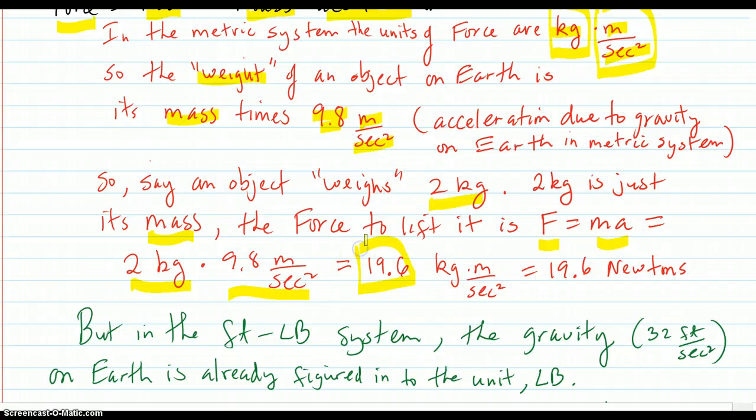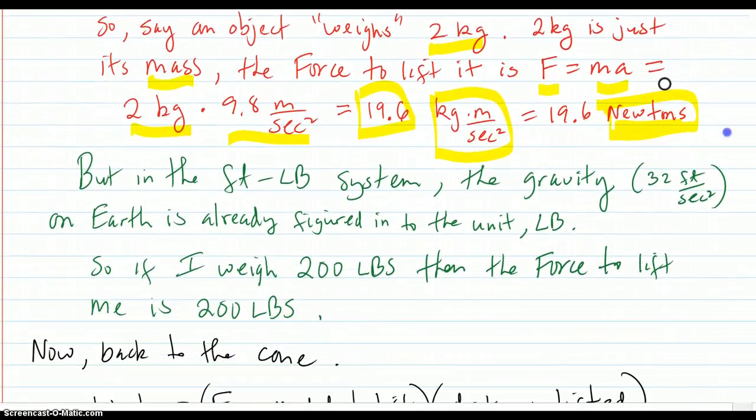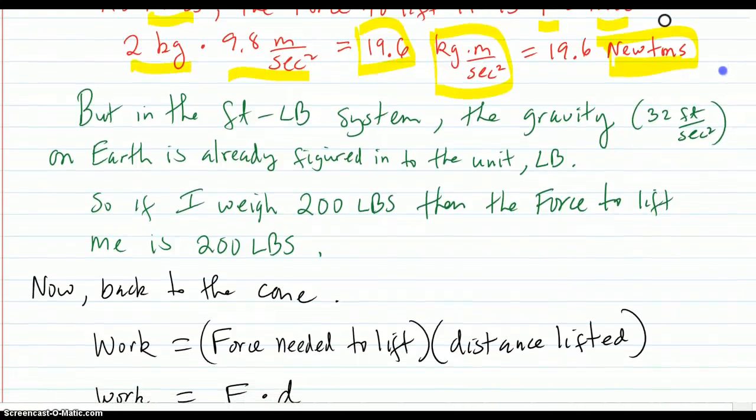So the force to lift it is F equals MA equals 2 kilograms times this number. So it would be 19.6 kilogram meters per second squared. And they also call that Newton. Kilogram meters per second squared is Newtons. So that's force in the metric system. Now, back to our problem, we're in the foot-pound system this time.